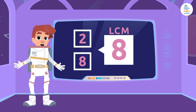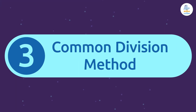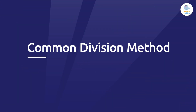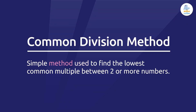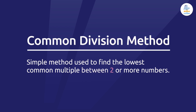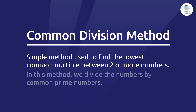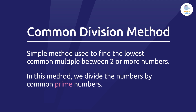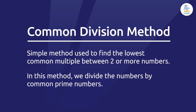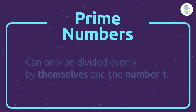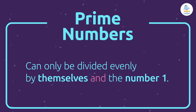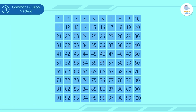It's called the common division method — a simple method used to find the lowest common multiple between two or more numbers. In this method, we divide the numbers by common prime numbers. Remember, prime numbers can only be divided evenly by themselves and the number 1. Some prime numbers include: 2, 3, 5, 7, 11, 13, 17...